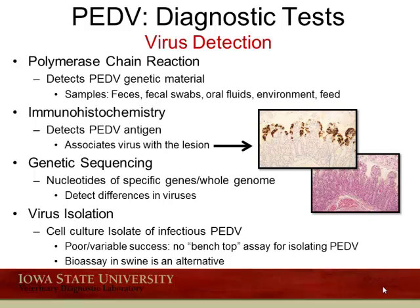Other diagnostic tests include immunohistochemistry, which allows us to take fixed tissue, recognize a lesion that could correlate with a particular infection, and through a chemical reaction identify the agent within that lesion. Genetic sequencing continues to increase, looking at particular nucleotides of a gene or the whole genome. Veterinarians are requesting sequencing to compare viruses for genetic differences or the potential emergence of different strains. However, virus isolation of PED in cell culture has proved quite difficult and success is variable, so bioassays in swine are used as an alternative to detect whether infectious virus exists in a sample.